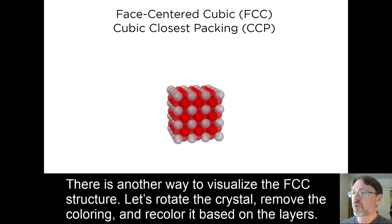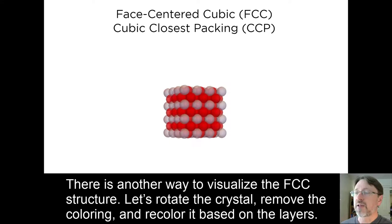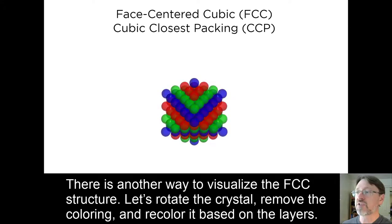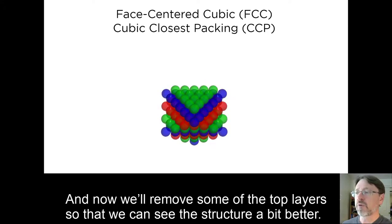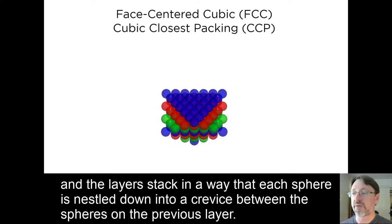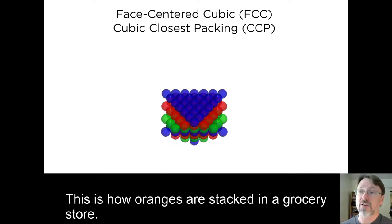There's another way to visualize the FCC structure. Let's rotate the crystal, remove the coloring, and recolor it based on the layers. And now we'll remove some of the top layers, so that we can see the structure a bit better. Notice that each layer is a hexagonal pattern of spheres, and that the layers stack in a way that each sphere is nestled down into a crevice between the spheres on a previous layer. This is how oranges are stacked in a grocery store.